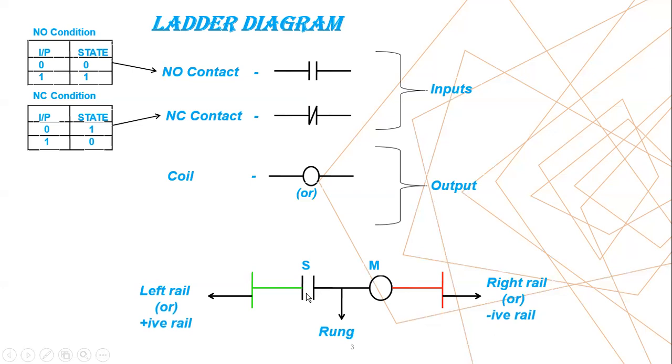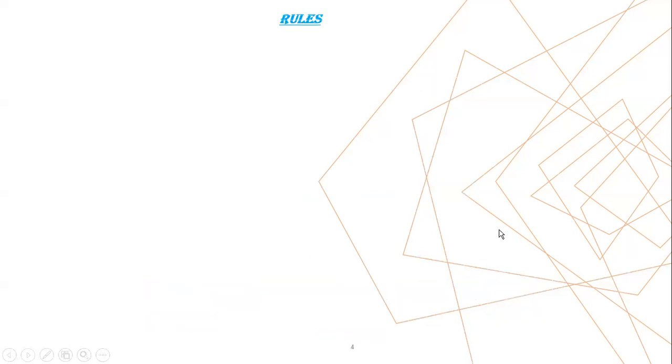So right now the contact gets closed, that means the state changes to one. That status will be stored in that address only. So it is very important: whenever you use a symbol, always that symbol should be used with an address. And let's see some rules when we develop a program. First rule: in a rung without address we should not use it, it will show an error.